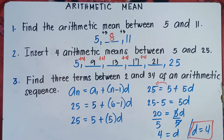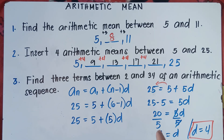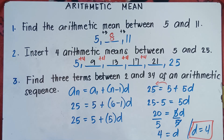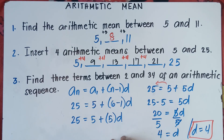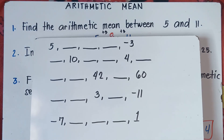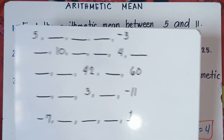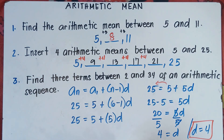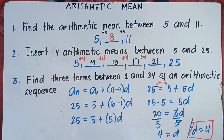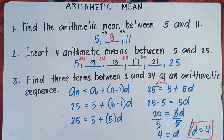So you try to answer number 3: find the 3 terms between 2 and 34 of an arithmetic sequence. Put your answer in the comment section below so we can check if you really understand this. I also have a video on finding missing numbers — I'll put the link in the description below. Once again, this is Teacher MJ. Have a great day. I hope you learned something new today. Don't forget to like, subscribe, and share our video. Goodbye for now!